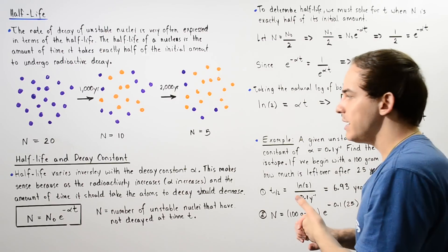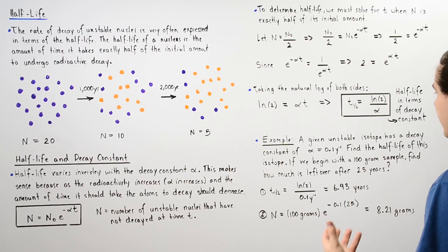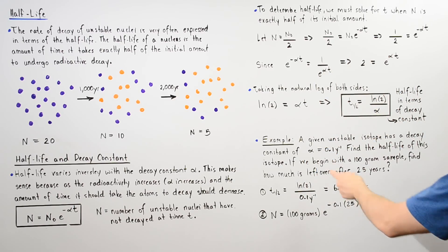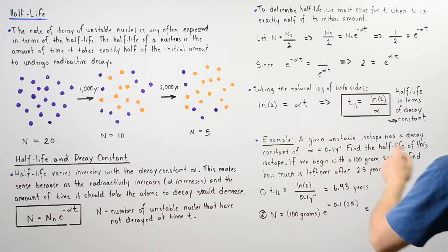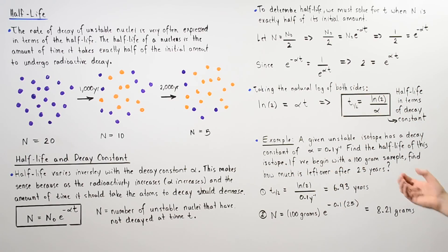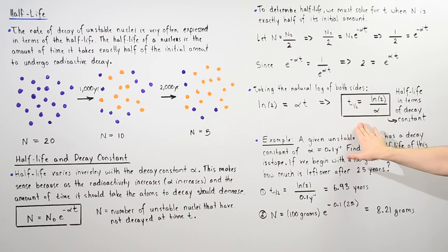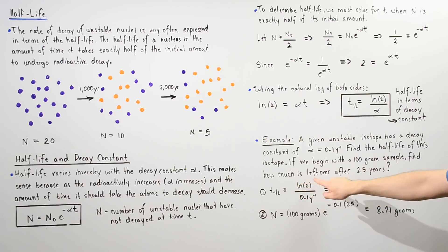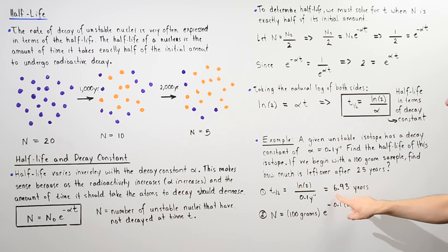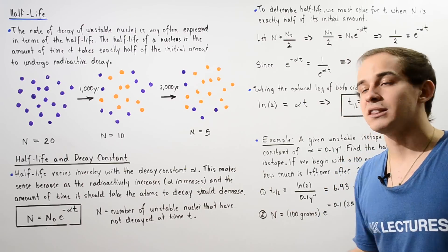Let's look at an example. A given unstable radioactive isotope has a decay constant of alpha equals 0.1 years to the negative one. We need to find the half-life of this isotope. Using t-one-half equals natural log of 2 divided by 0.1, we get approximately 6.93 years. So if we begin with a sample of 100 grams and wait 6.93 years, we'll have 50 grams left over.